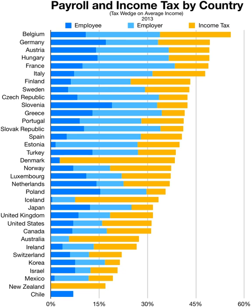Nearly all income tax systems permit residents to reduce gross income by business and some other types of deductions. By contrast, nonresidents are generally subject to income tax on the gross amount of income of most types plus the net business income earned within the jurisdiction. Expenses incurred in a trading, business, rental, or other income-producing activity are generally deductible, though there may be limitations on some types of expenses or activities.